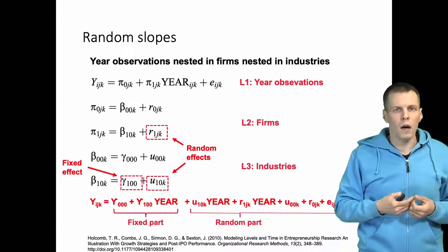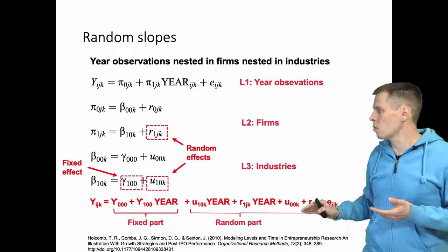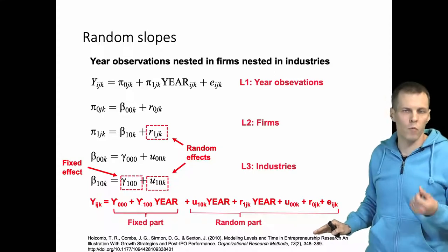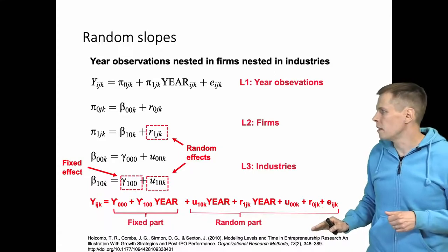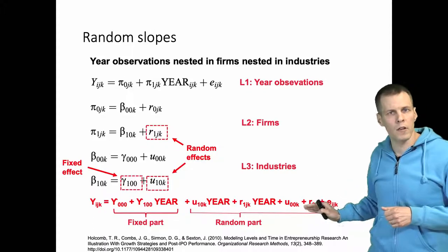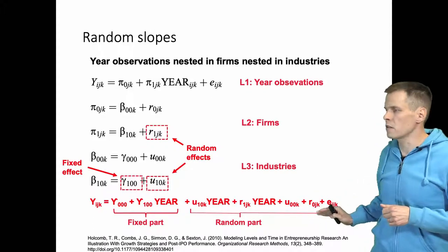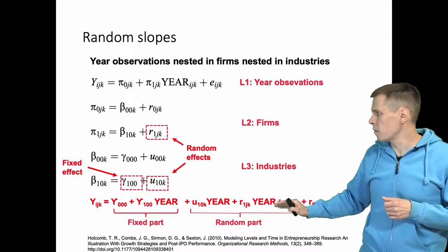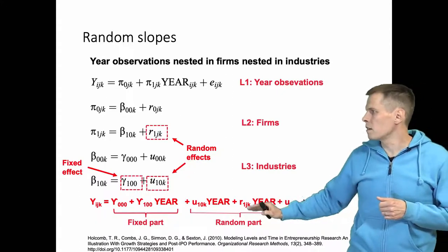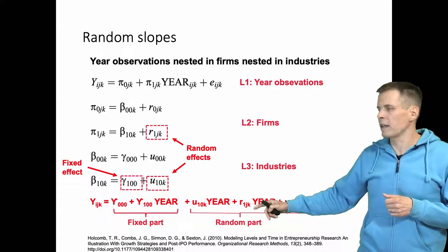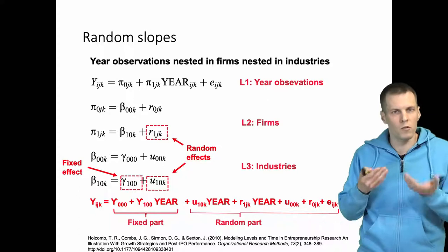When we write this out as a mixed model, we can see that the random part gets more complicated. We have more stuff in the random part, and instead of simply having this effect of clustering, we have this effect of year. We can see here that the variance of the error term depends on the year.